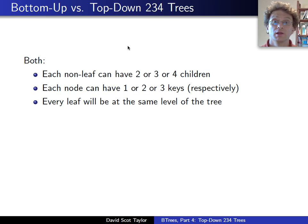In either case, each non-leaf node will have two or three or four children. Every node will have one, two, or three keys. If the node has two children, that matches with one key. Three children matches with two keys, and if it has four children, that matches with three keys if the node is a non-leaf. And every leaf will be at the same level.